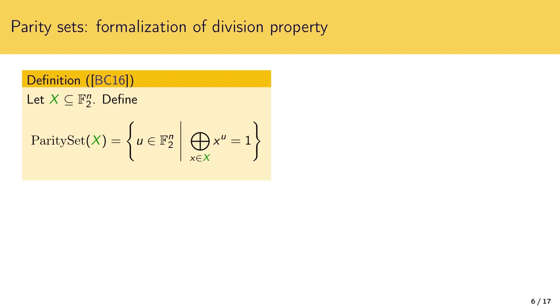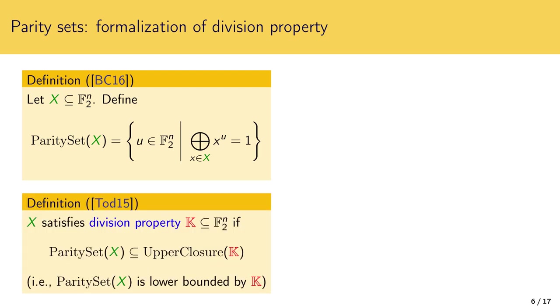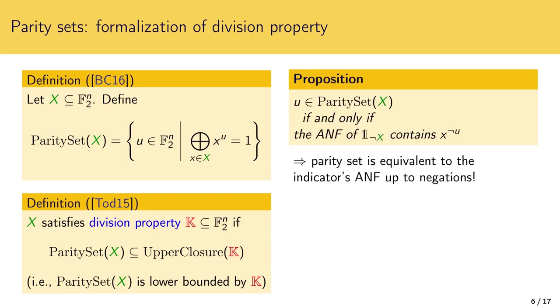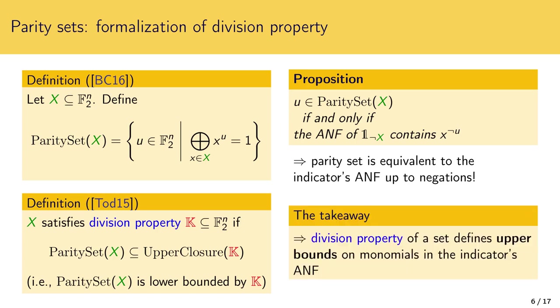I will now briefly recall formalization of division property. At Crypto 2016 Buran-Canto introduced parity sets as another view of division property. Simply speaking parity sets capture which products of bits sum to one over the given set. Todo's division property of a set can be defined simply as a lower bound on its parity set. Here upper closure simply means the smallest upper set containing k. It can be shown that the parity set is basically equivalent to the algebraic normal form of the set's indicator function. I recall that indicator function is a boolean function equal to one on the elements of the set and to zero on the non-elements of the set. In other words it represents the set as a function. So using this link we can conclude that division property simply defines vectorial upper bounds on monomials in the ANF of the indicator of the set.